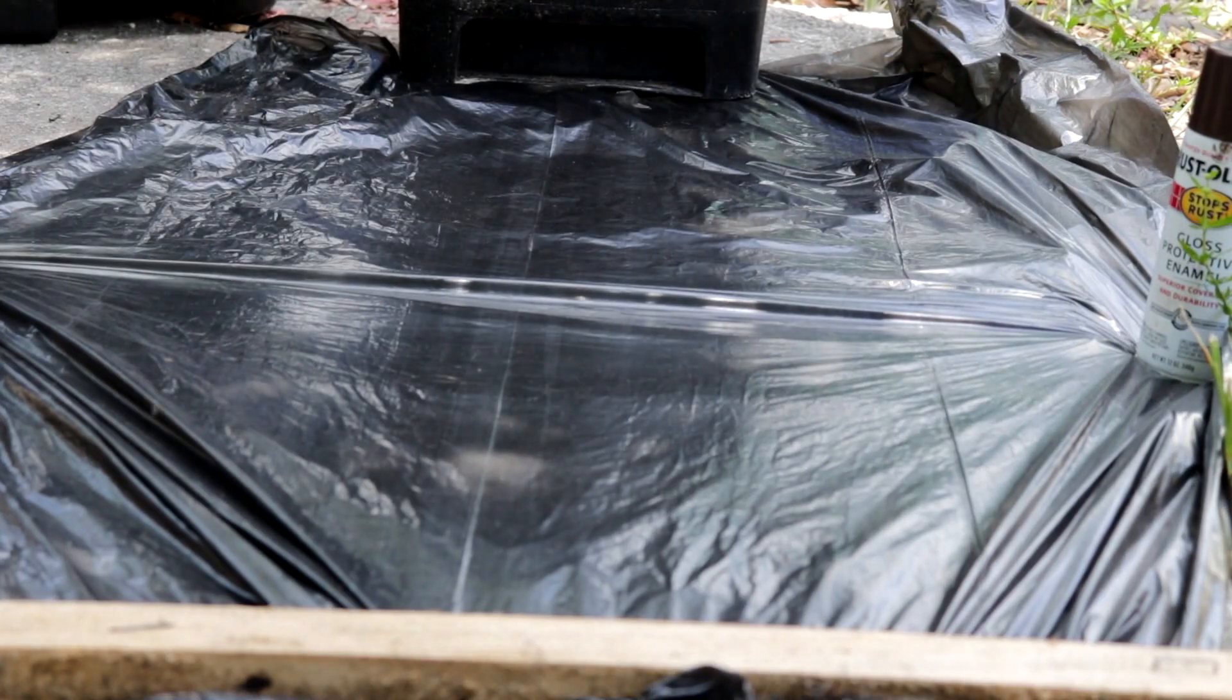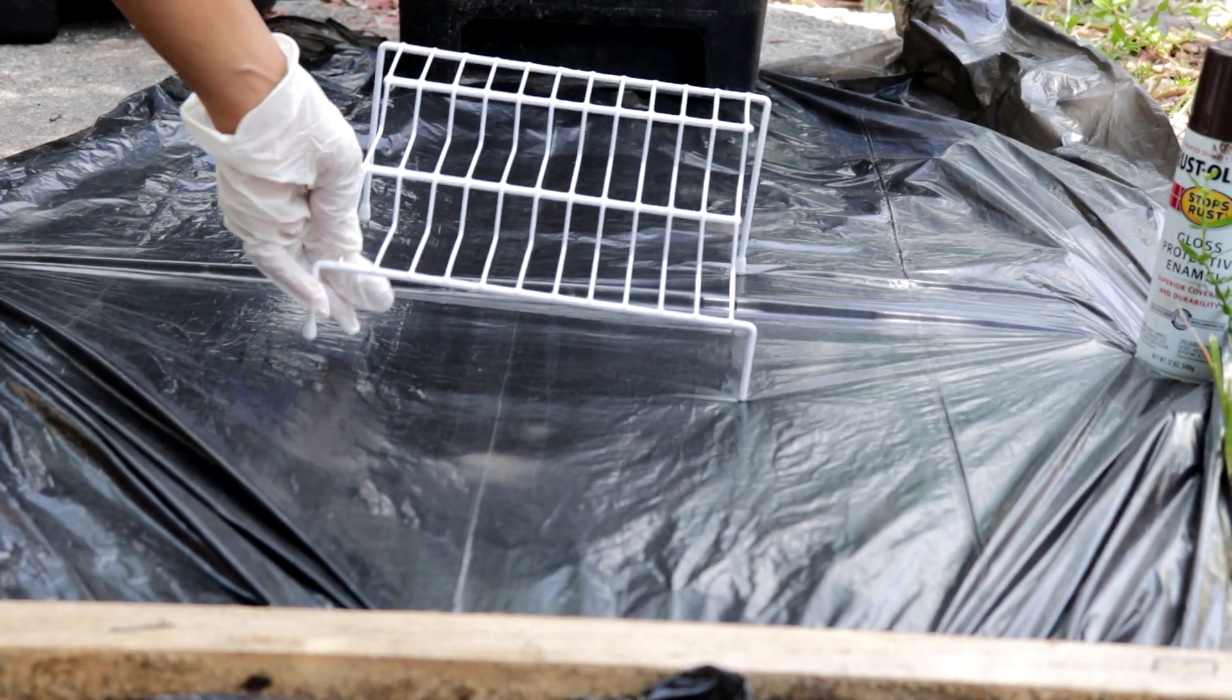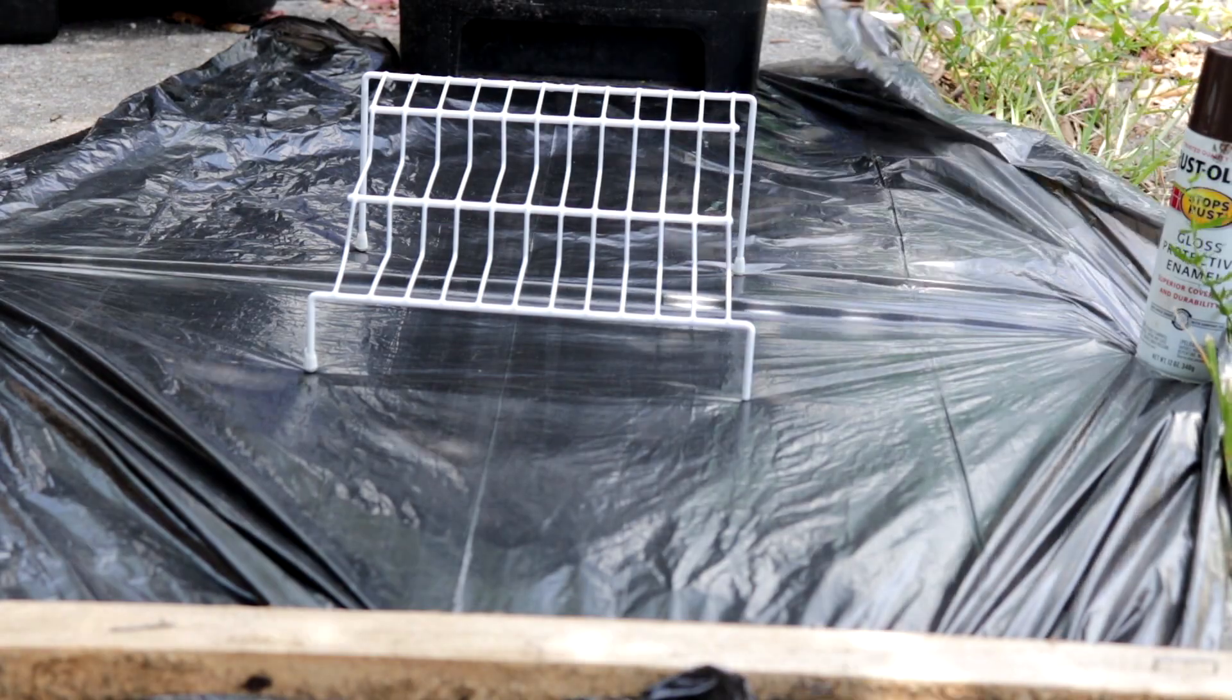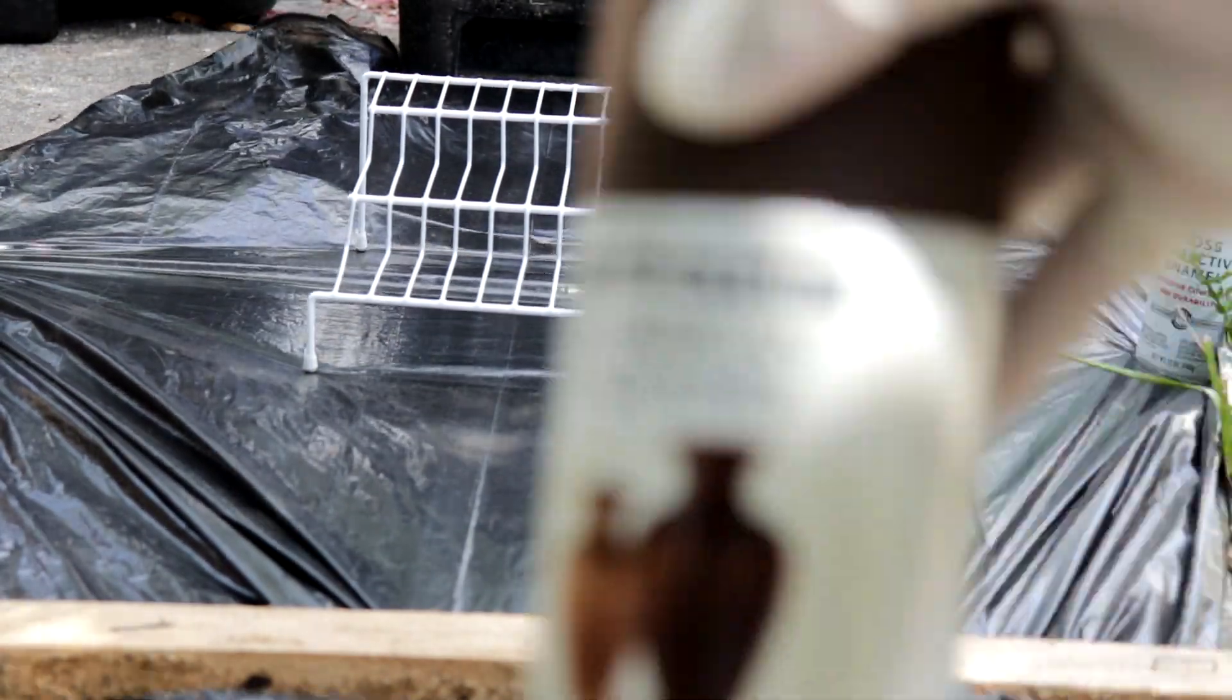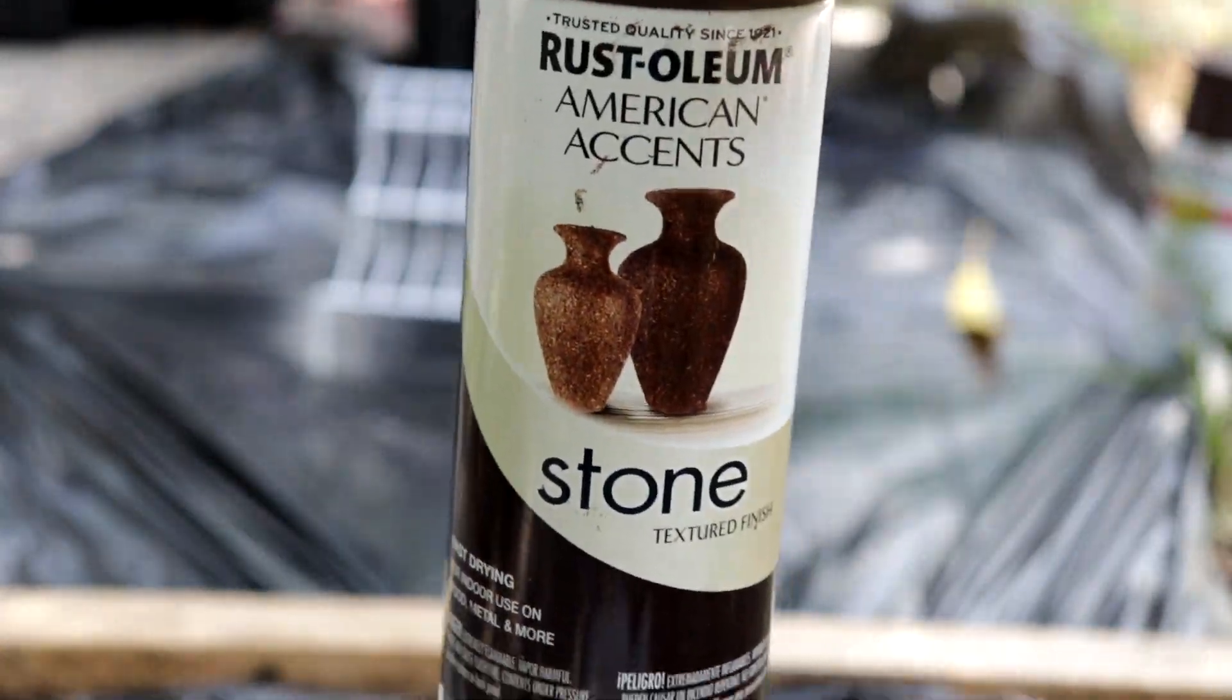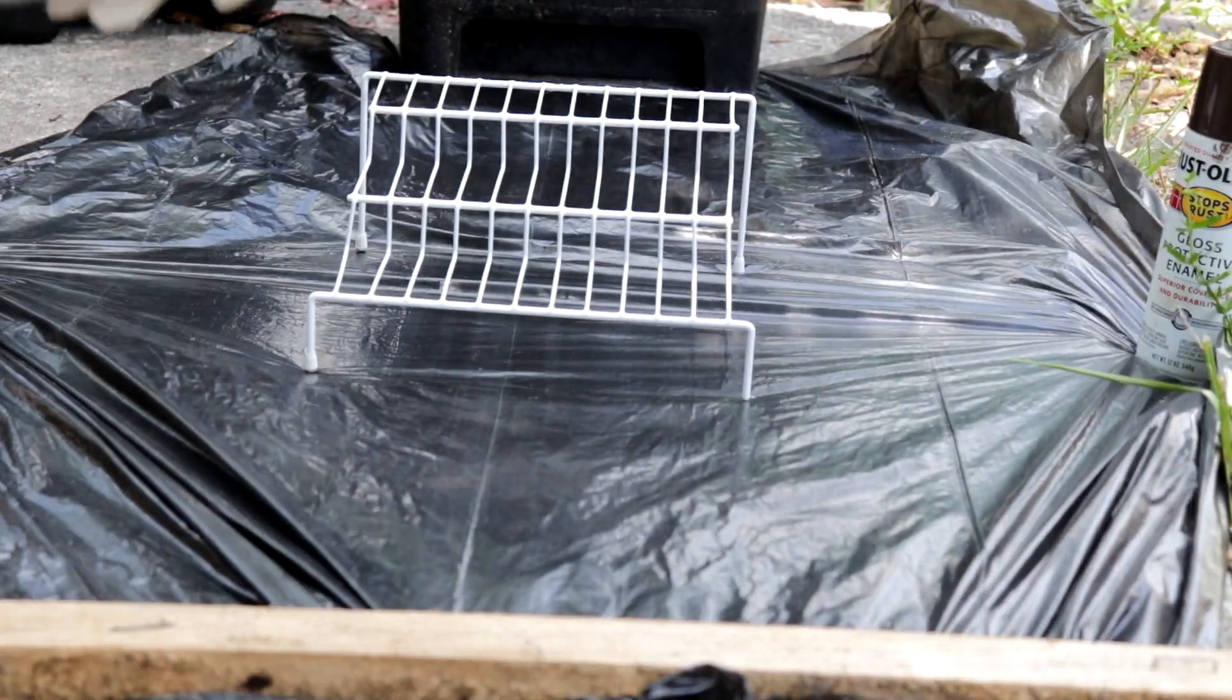I lined the floor with a garbage bag, grabbed the rustic aluminum texture spray, and gave it a good coat to give the shelf some texture.